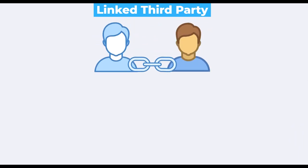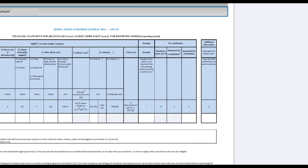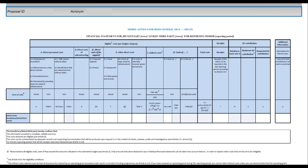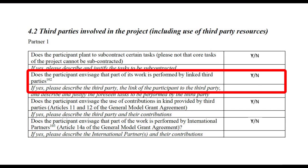Another type of third parties are the so-called linked third parties. These may be affiliated entities and third parties with a legal link to a beneficiary — for instance, a parent organization and its subsidiary, or an association and its members. The main feature of linked third parties is their long-term link to the beneficiary; the link cannot be created only for the purpose of the Horizon project. Unlike subcontractors and contractors, the linked third party computes its budget and reports to the Commission on a cost basis, which must be supported in the third party's accounting. The linked third party fills out its own financial statement and, if applicable, delivers its own certificate on the financial statements. Similarly to subcontracts, linked third parties work on project tasks and must be foreseen in the project proposal.